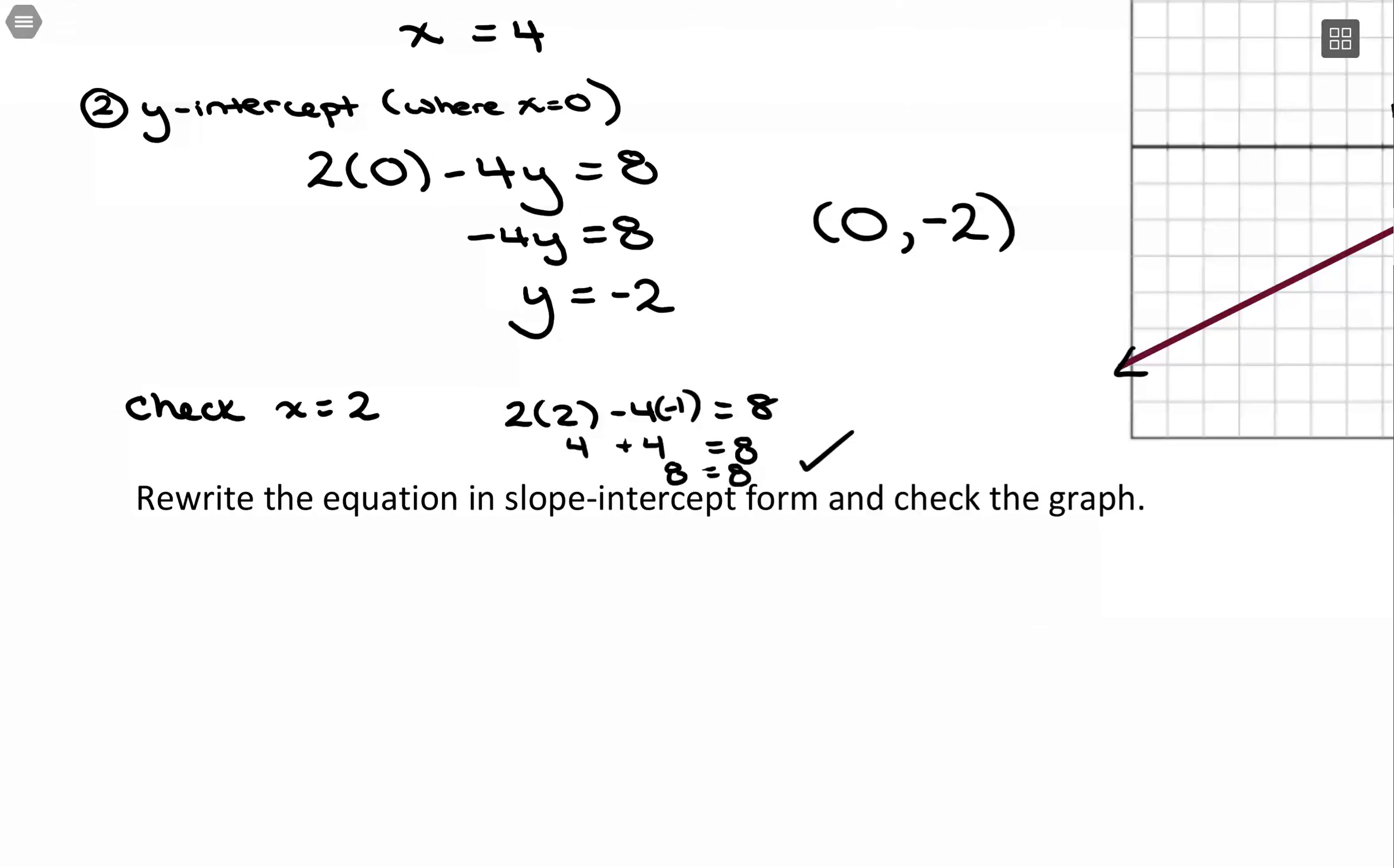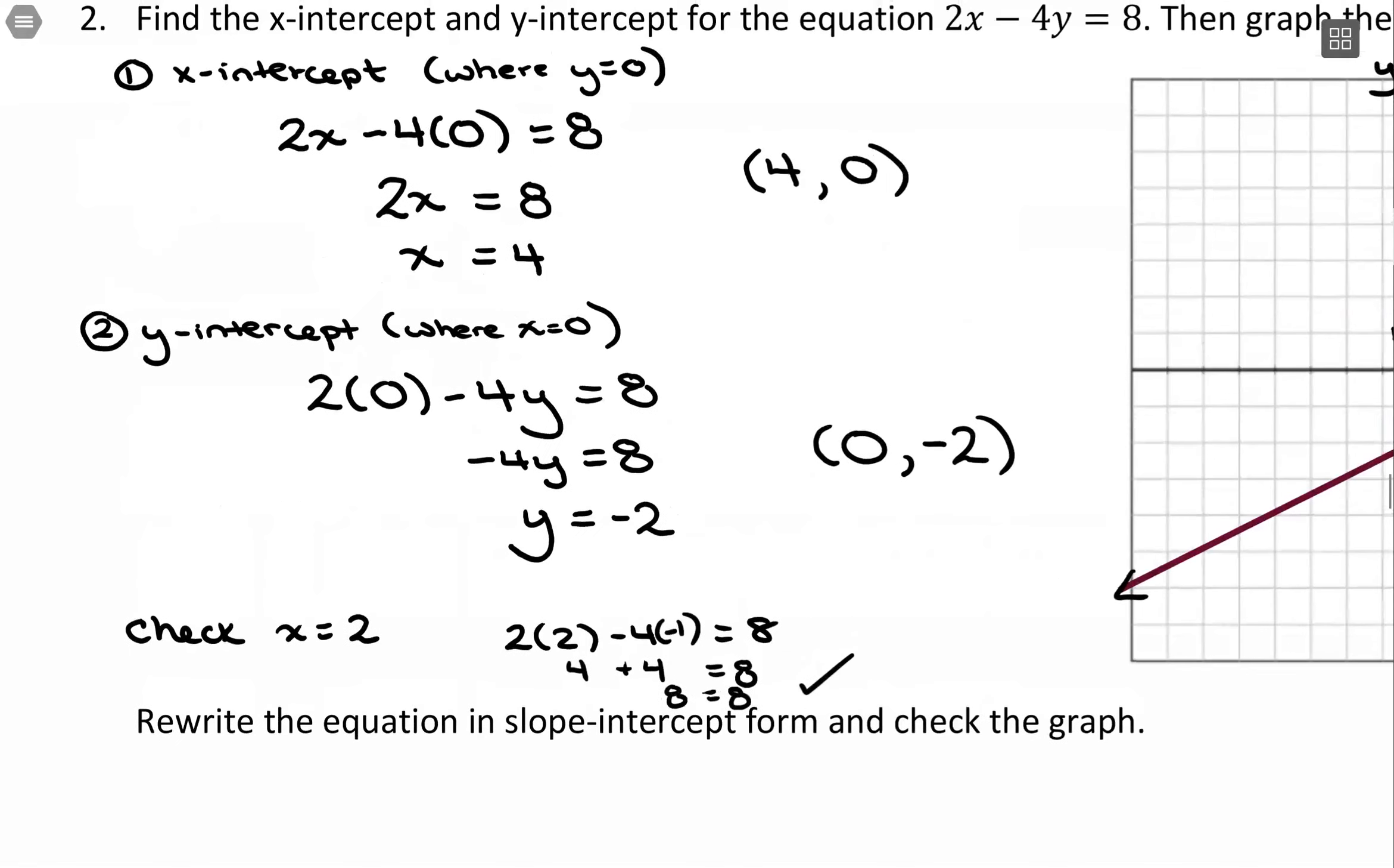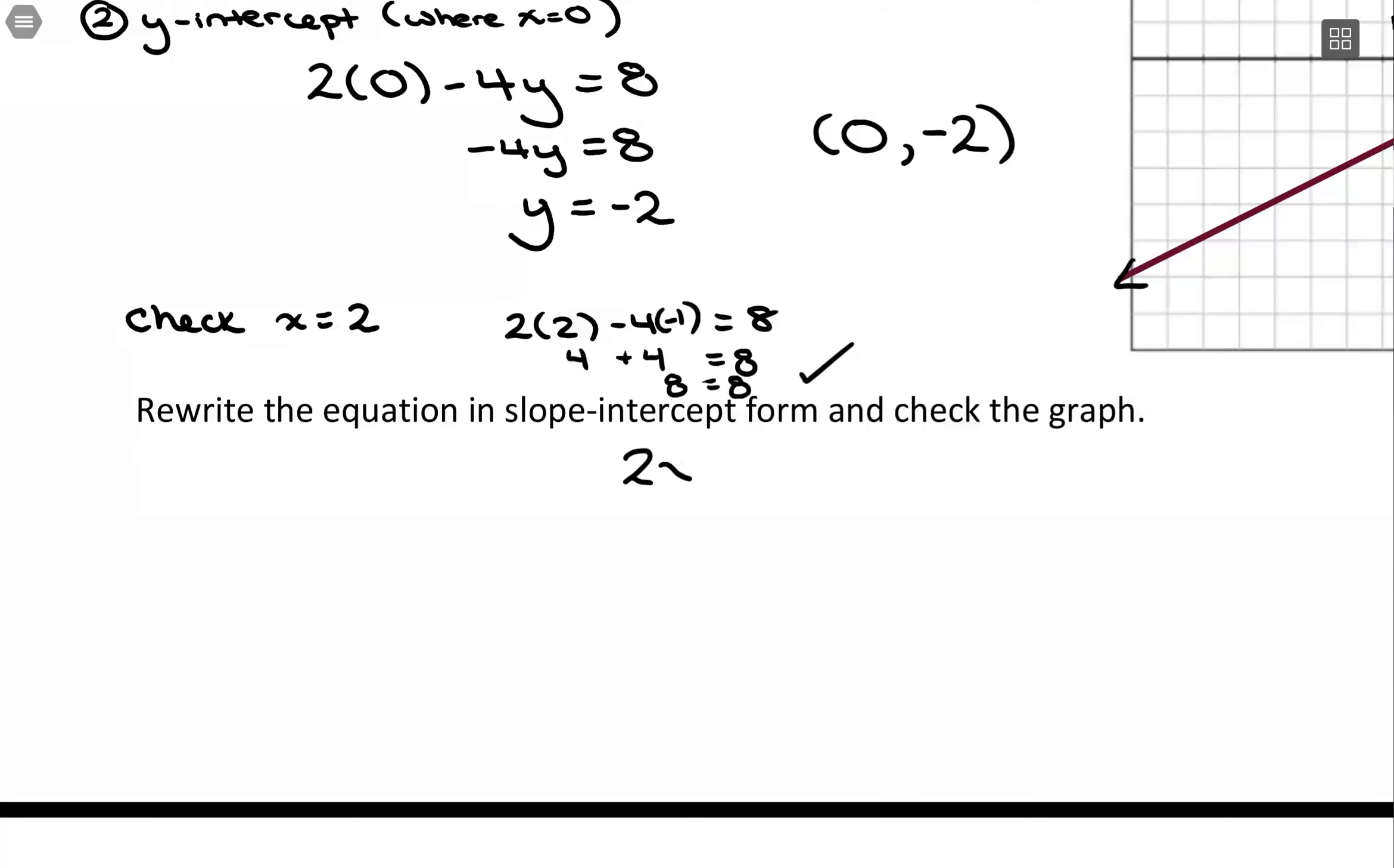Changing to slope intercept form. If you have the equation in standard form, so 2x minus 4y equals 8, all we need to do is solve for y. Because the idea of slope intercept form is that you have y all alone on one side of the equation. So solving for y, I need to get this 2x away. So I'm going to subtract 2x from both sides. So I have this negative 4y equals 8 minus 2x.